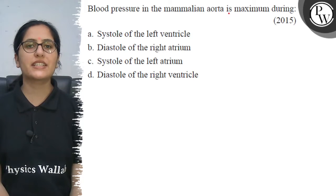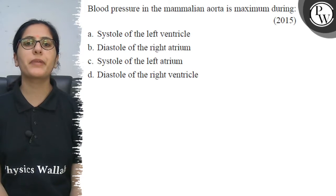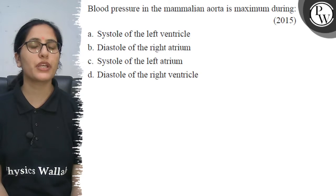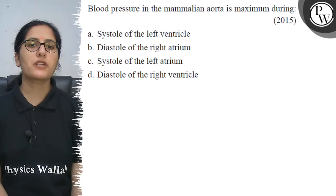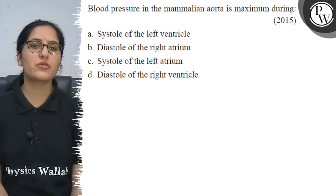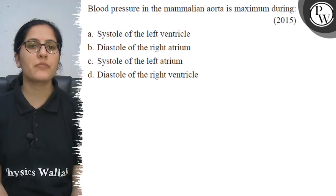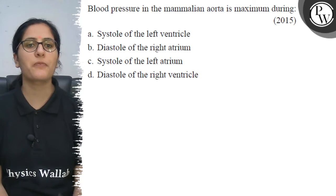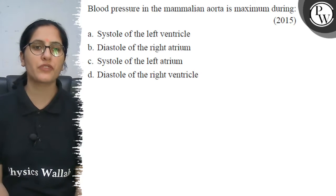Let's discuss: blood pressure in the mammalian aorta is maximum during — option A is systole of the left ventricle, option B diastole of the right atrium, option C systole of the left atrium, and option D diastole of the right ventricle.